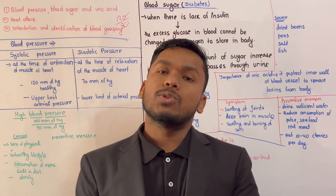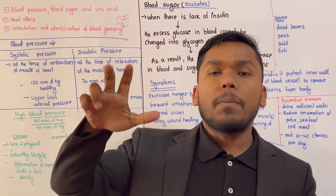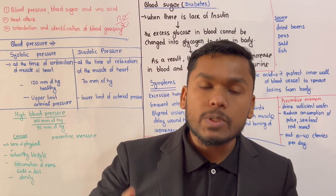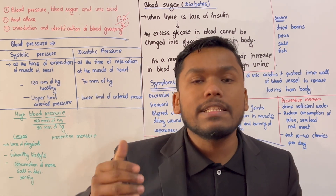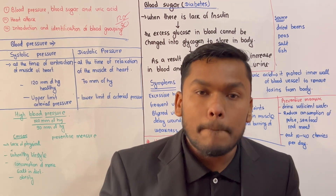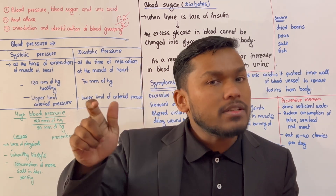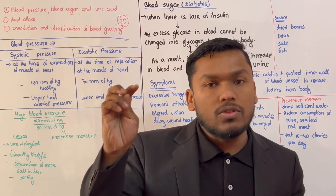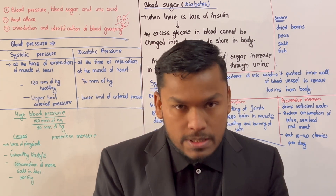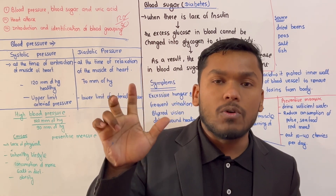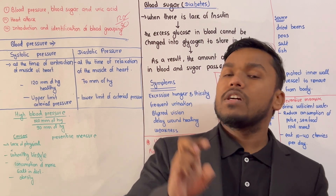The first priority is blood pressure. Blood pressure is the pressure given by blood on the wall of the artery. We count on the artery. Blood pressure is of two types.